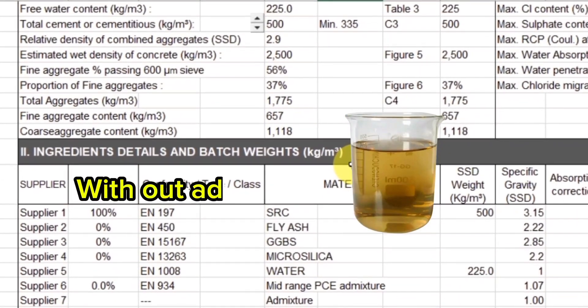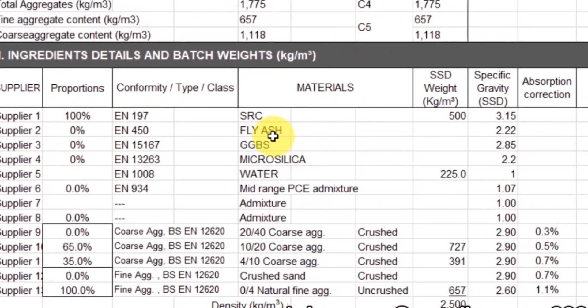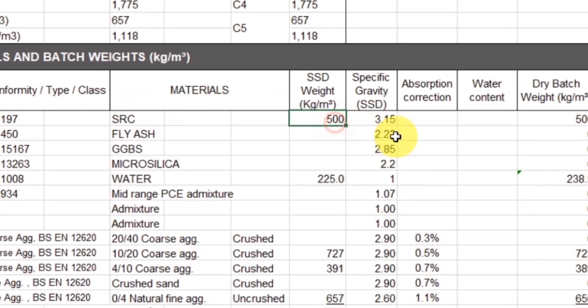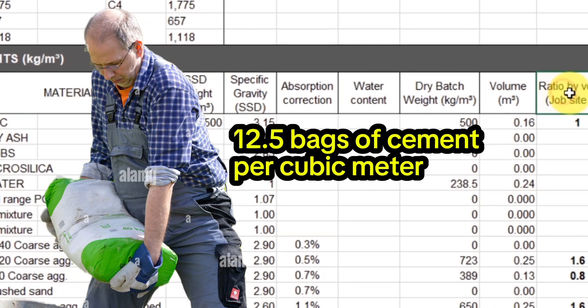Following tables and charts without using admixture, the cement content was 500 kg or 12.5 bags per cubic meter.